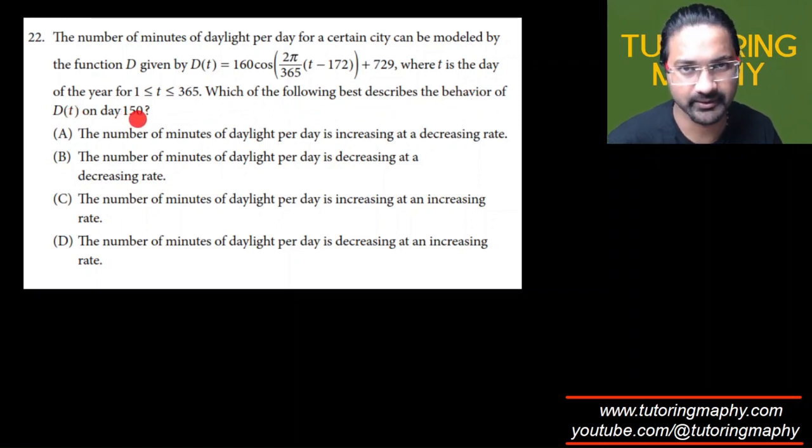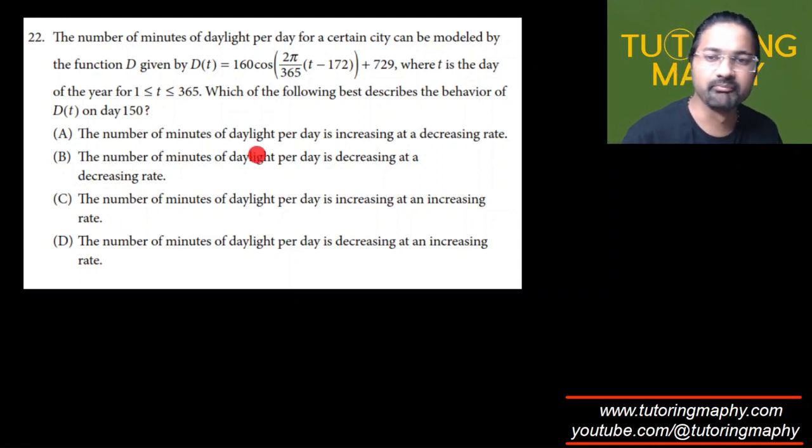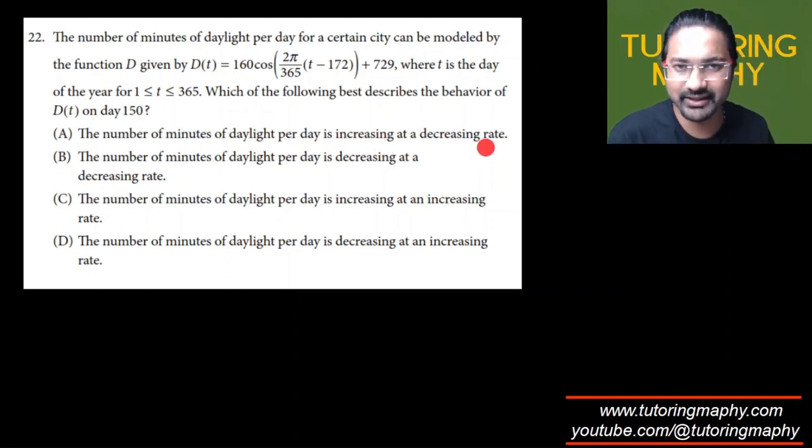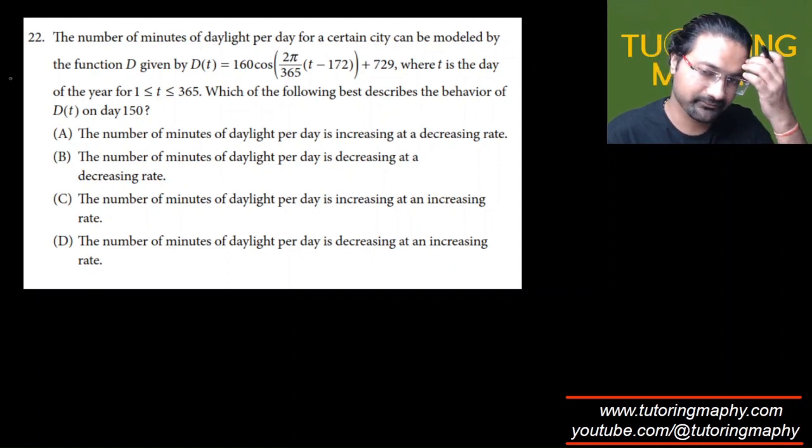Which of the following best describes the behavior of D(t) on day 150? The options are: the number of minutes of daylight per day is increasing at a decreasing rate, increasing at a decreasing rate, increasing at an increasing rate, and decreasing at an increasing rate.